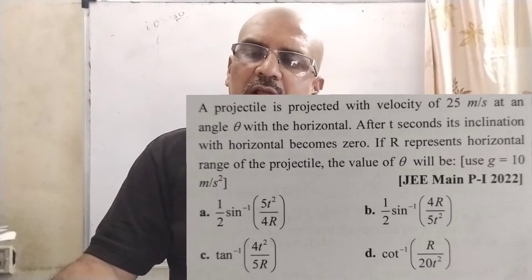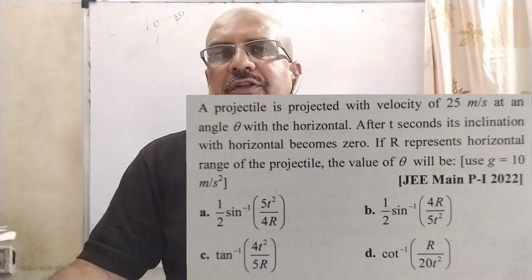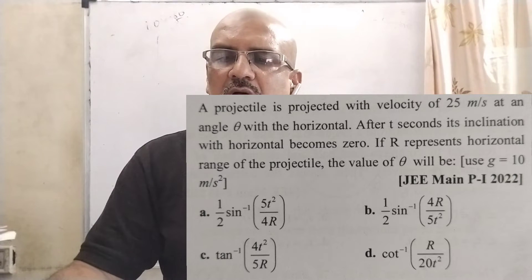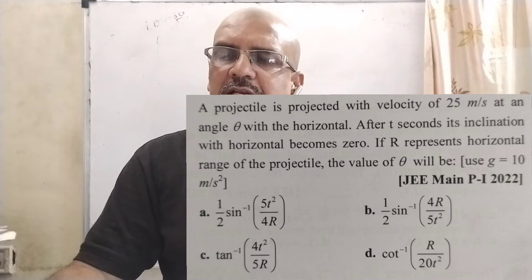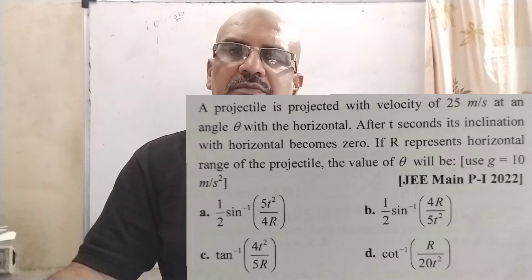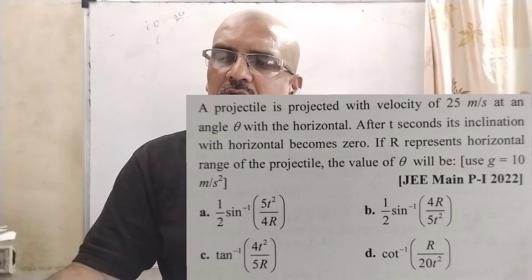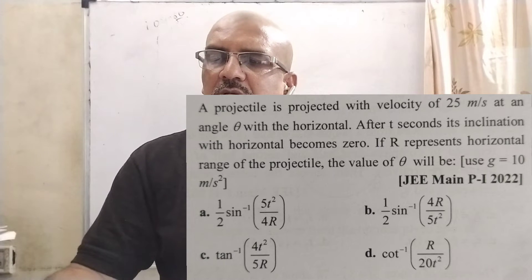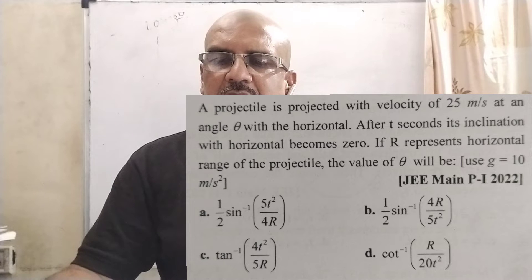Now here is the question. A projectile is projected with velocity of 25 m/s at an angle theta with the horizontal. After t seconds, its inclination with horizontal becomes zero. If R represents horizontal range of the projectile, the value of theta will be